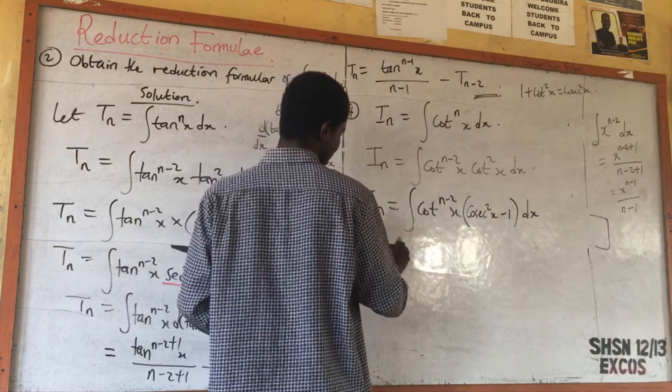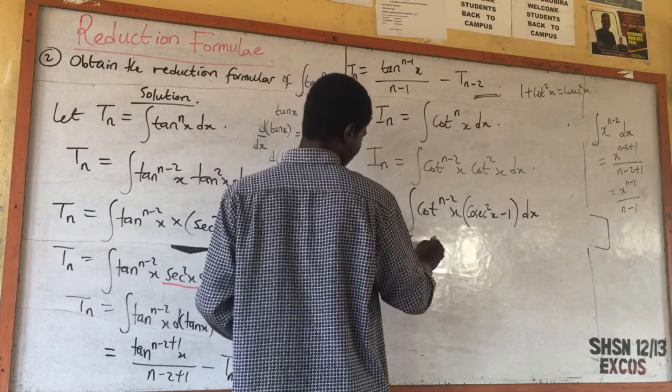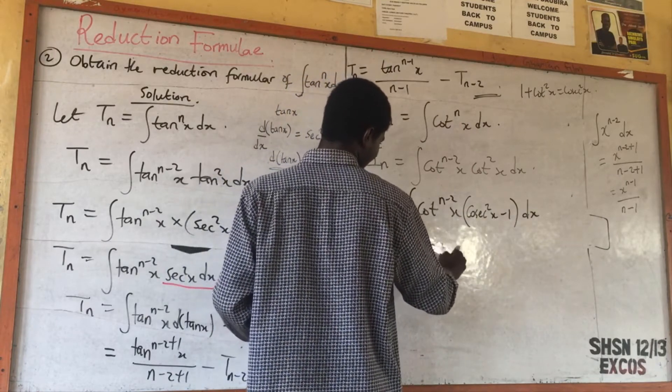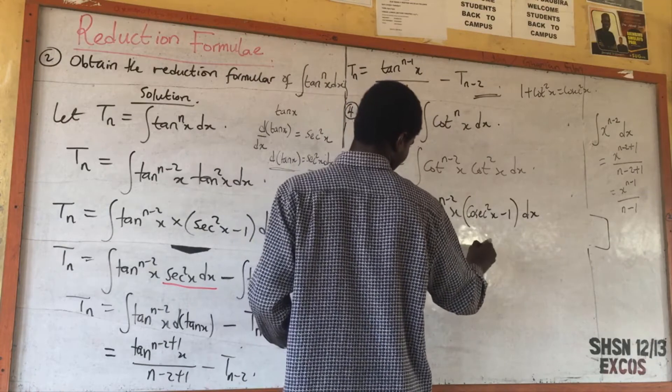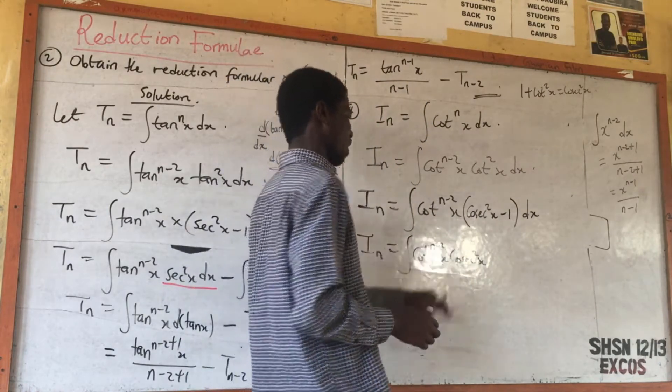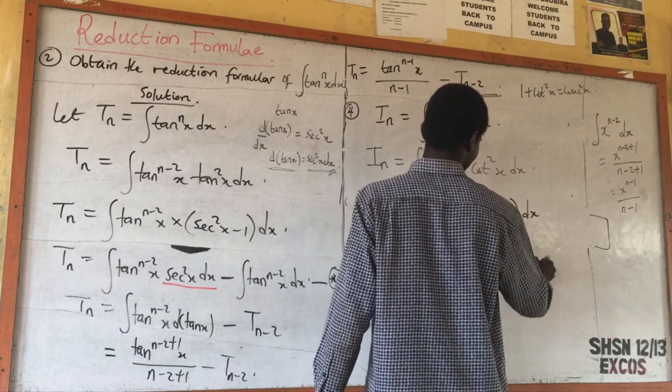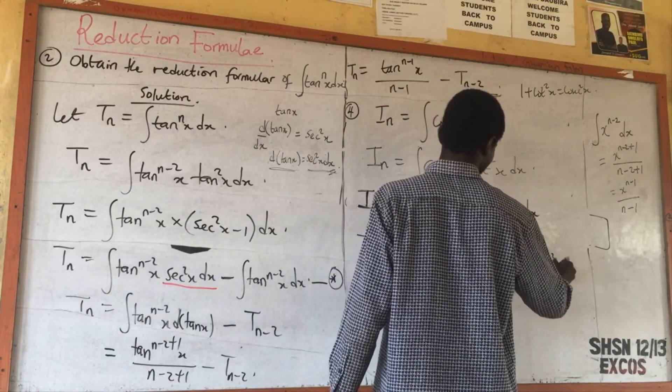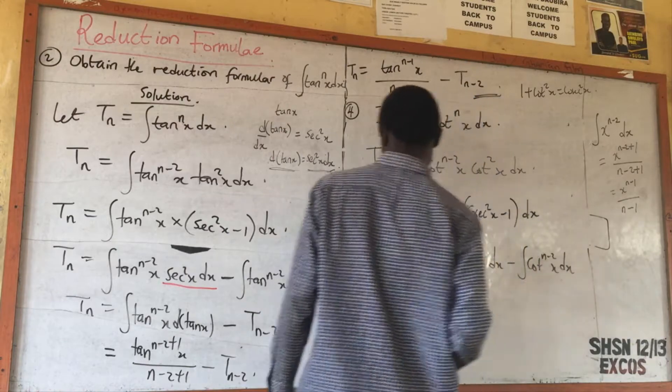I_n is equal to the integral of cot^(n-2)s csc²s ds minus the integral of cot^(n-2)s ds.